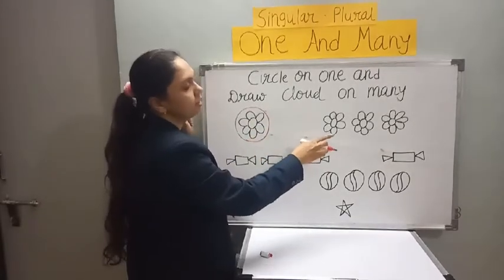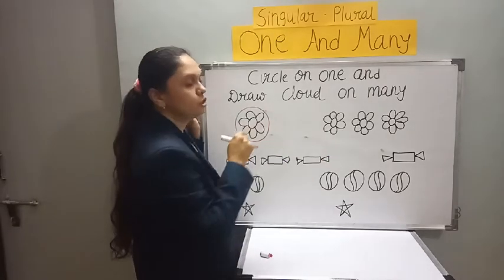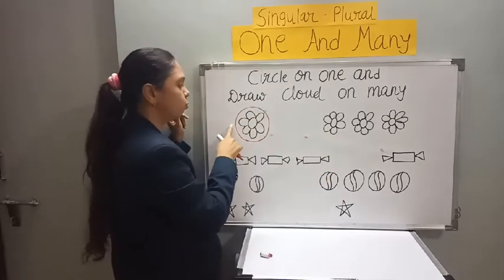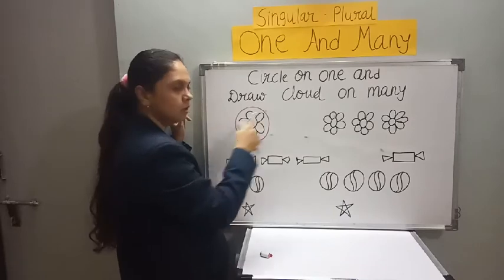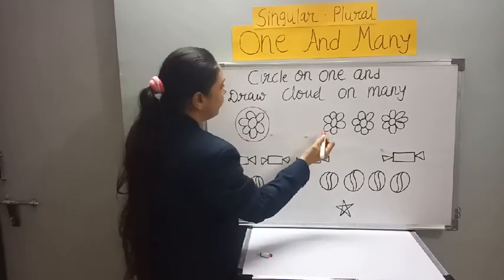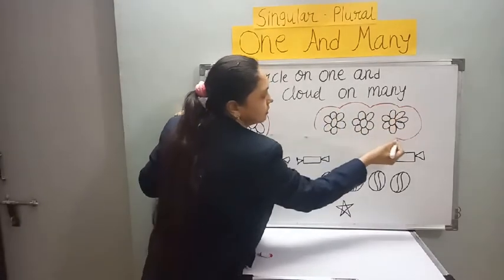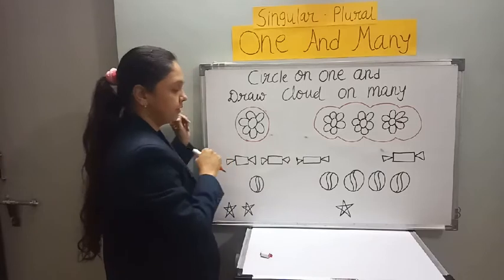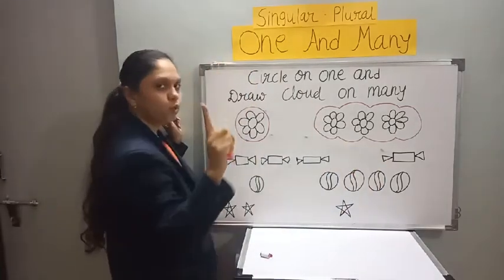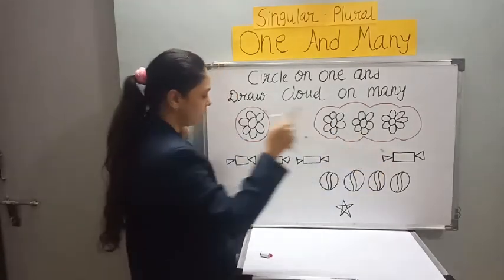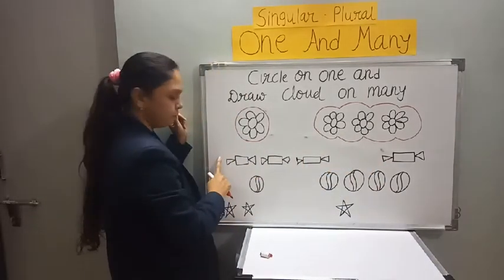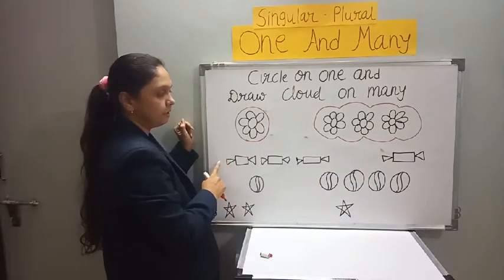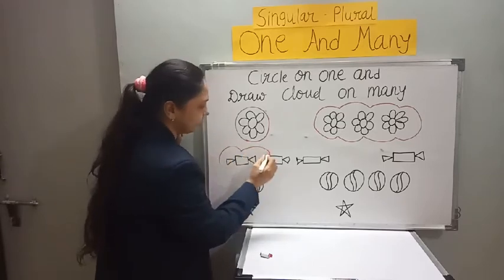And here are three flowers. How many flowers? Three flowers. So singular — plural. One — many. Now here: one, two, three — three chocolates. And here is only one chocolate. So here — singular, plural, one, many. On many, draw a cloud.